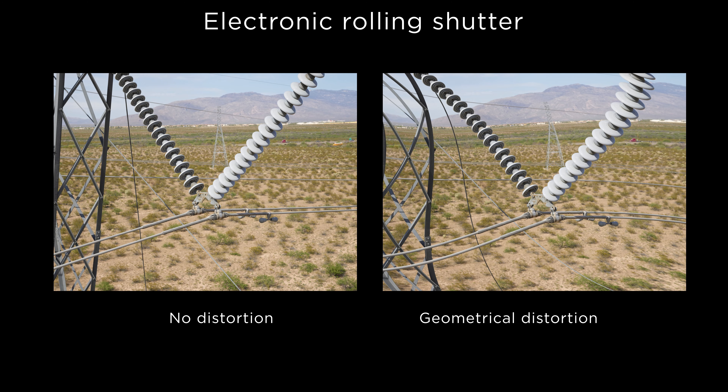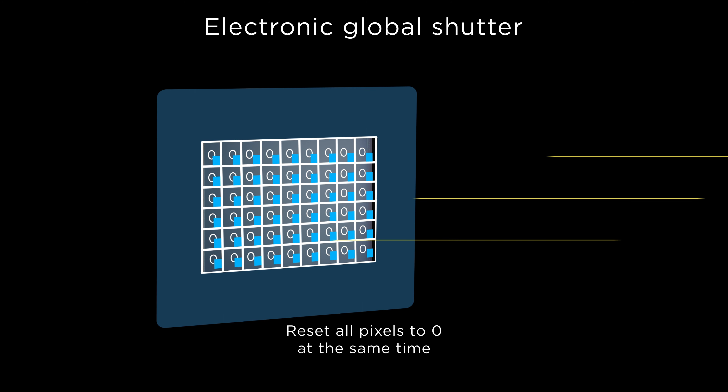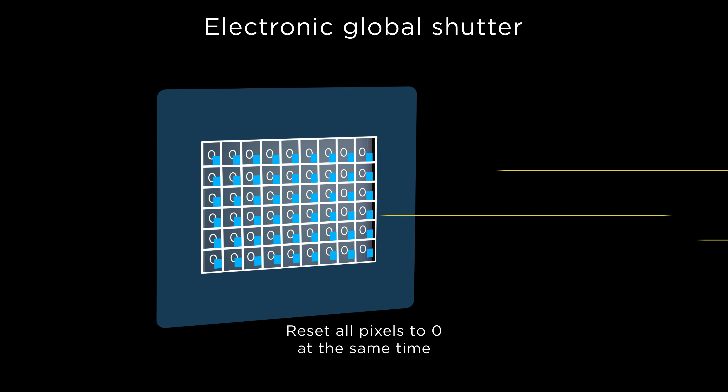This creates the same slit of exposure running across the sensor as with a focal plane shutter. Electronic rolling shutters have the benefit of no moving parts and they can achieve very fast shutter speeds. But because of the rolling exposure, they will create geometric shear across the frame in case of any motion.